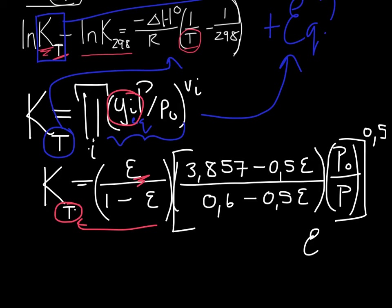In example 13.9 in Smith, Van Ness and Abbott with the steady state problem, this term is not present in their expression for K because the reaction takes place at the constant pressure of one atmosphere.